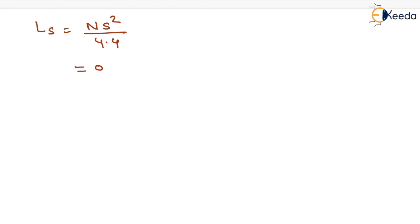The value of N is already calculated, it is 0.08. The value of stopping side distance is already given in the question, that is 128 whole square upon 4.4.